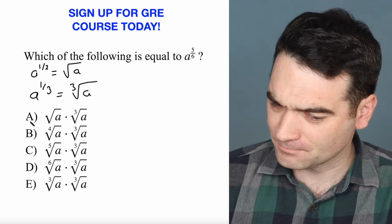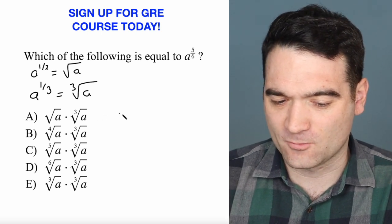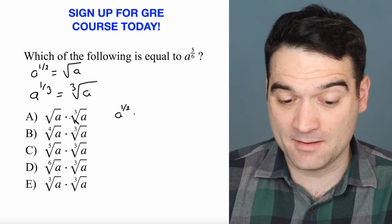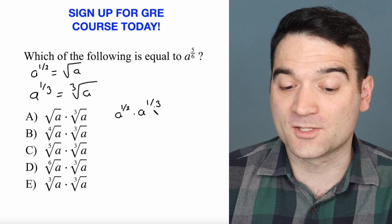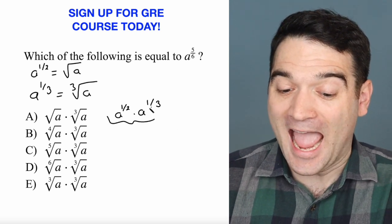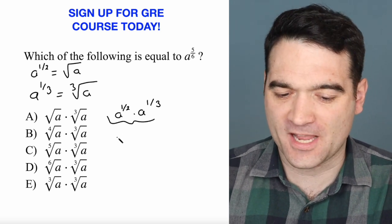Let's start with the first one, answer option A. Well, the square root of a, as I said, I'll just write it over here, is a to the power of 1 half times a to the power of 1 third. What's the rule for multiplying exponential terms? I add the exponents. This is very important to know. So I need to add these exponents together.